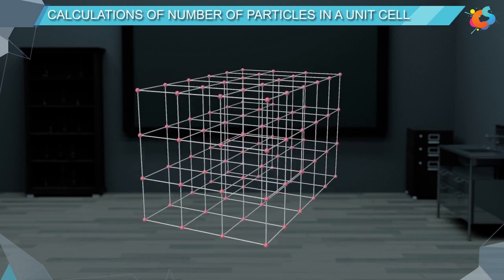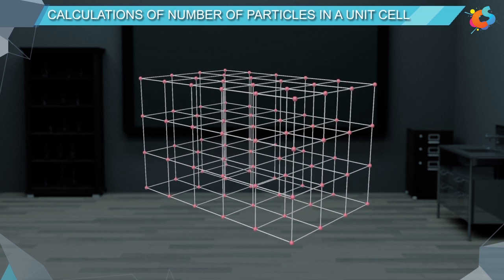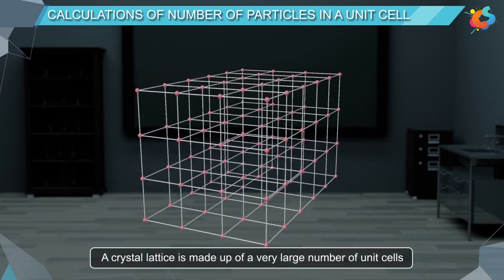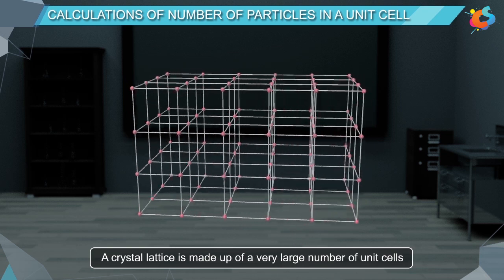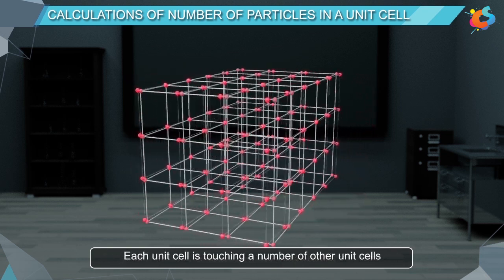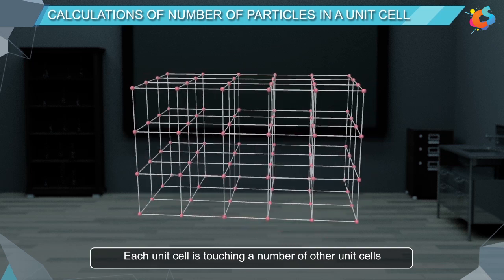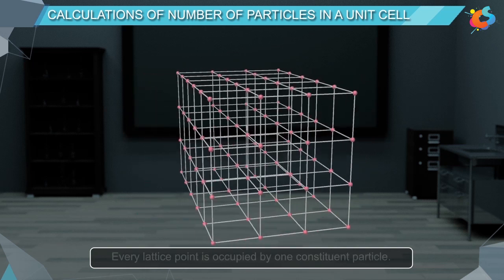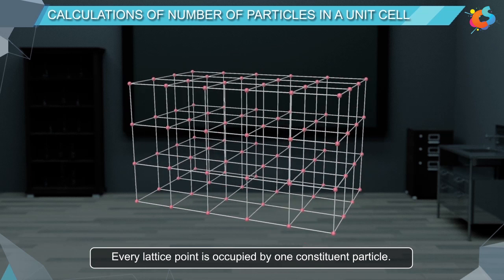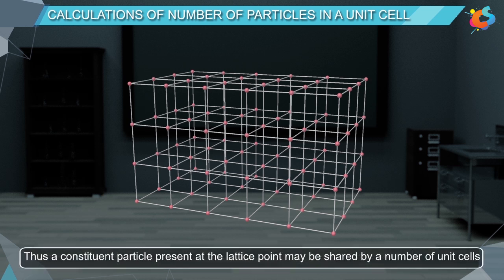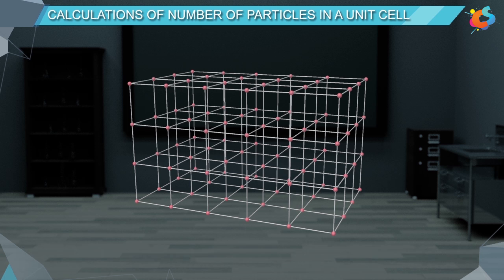Calculations of number of particles in a unit cell. A crystal lattice is made up of a very large number of unit cells. Each unit cell is touching a number of other unit cells. In a unit cell, every lattice point is occupied by one constituent particle. A constituent particle present at the lattice point may be shared by a number of unit cells. Let us now understand the contribution of a particle at a lattice point to its unit cell.